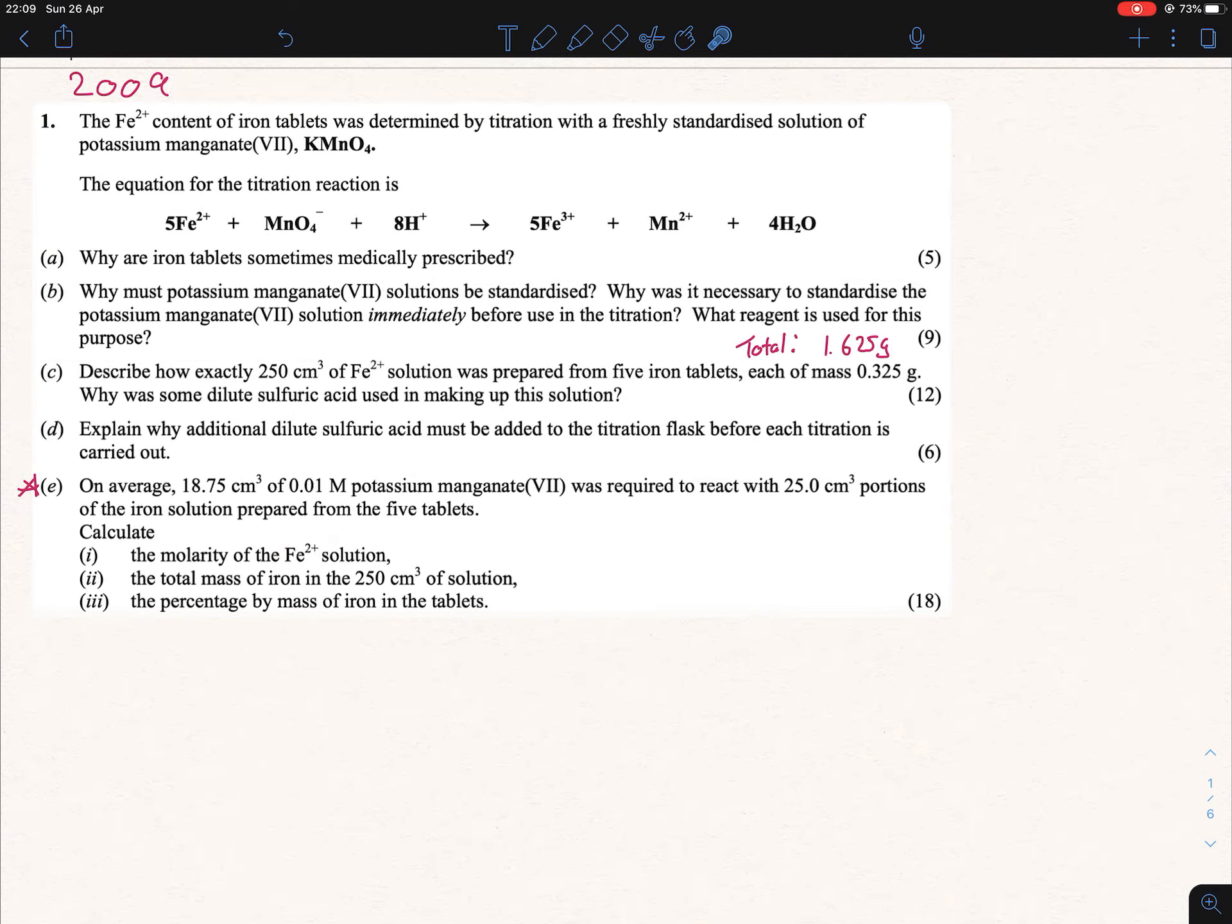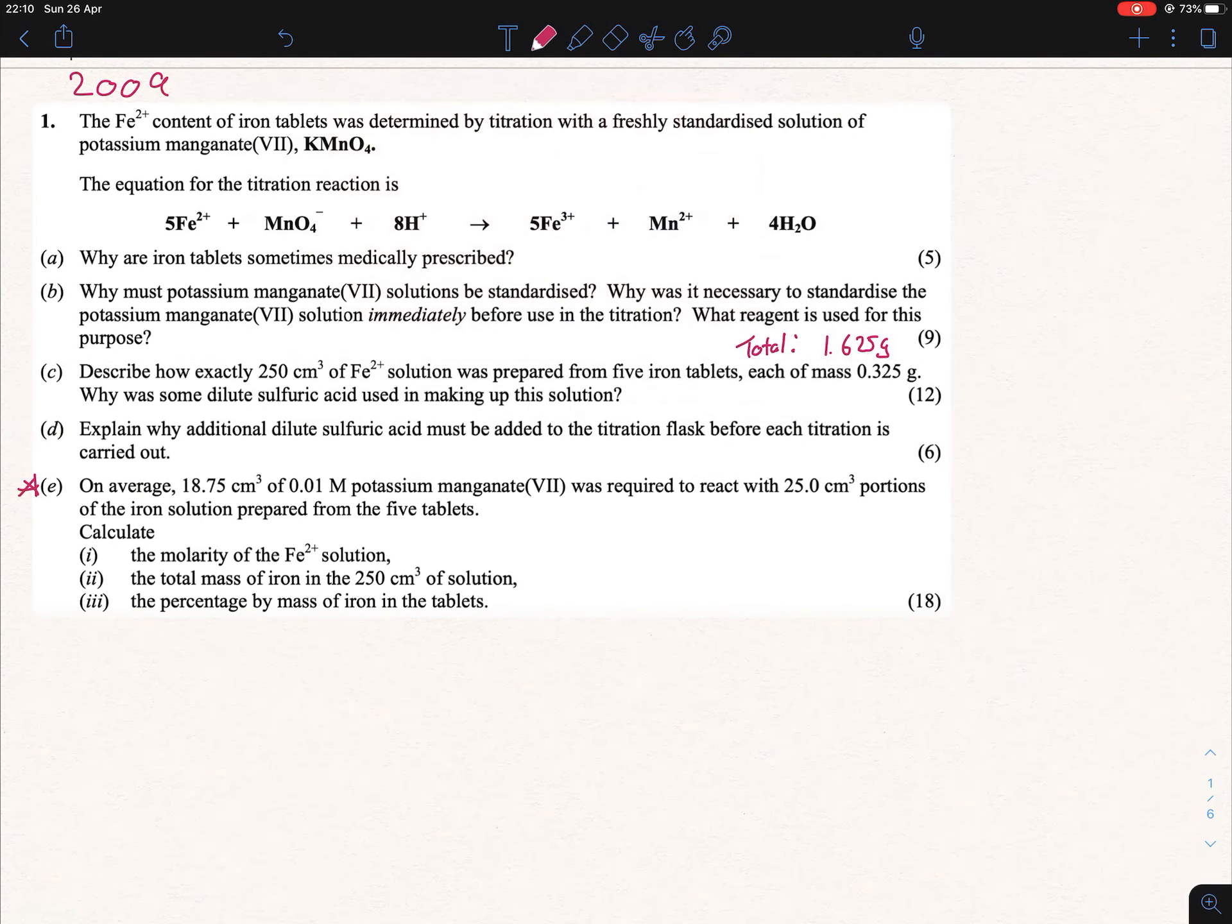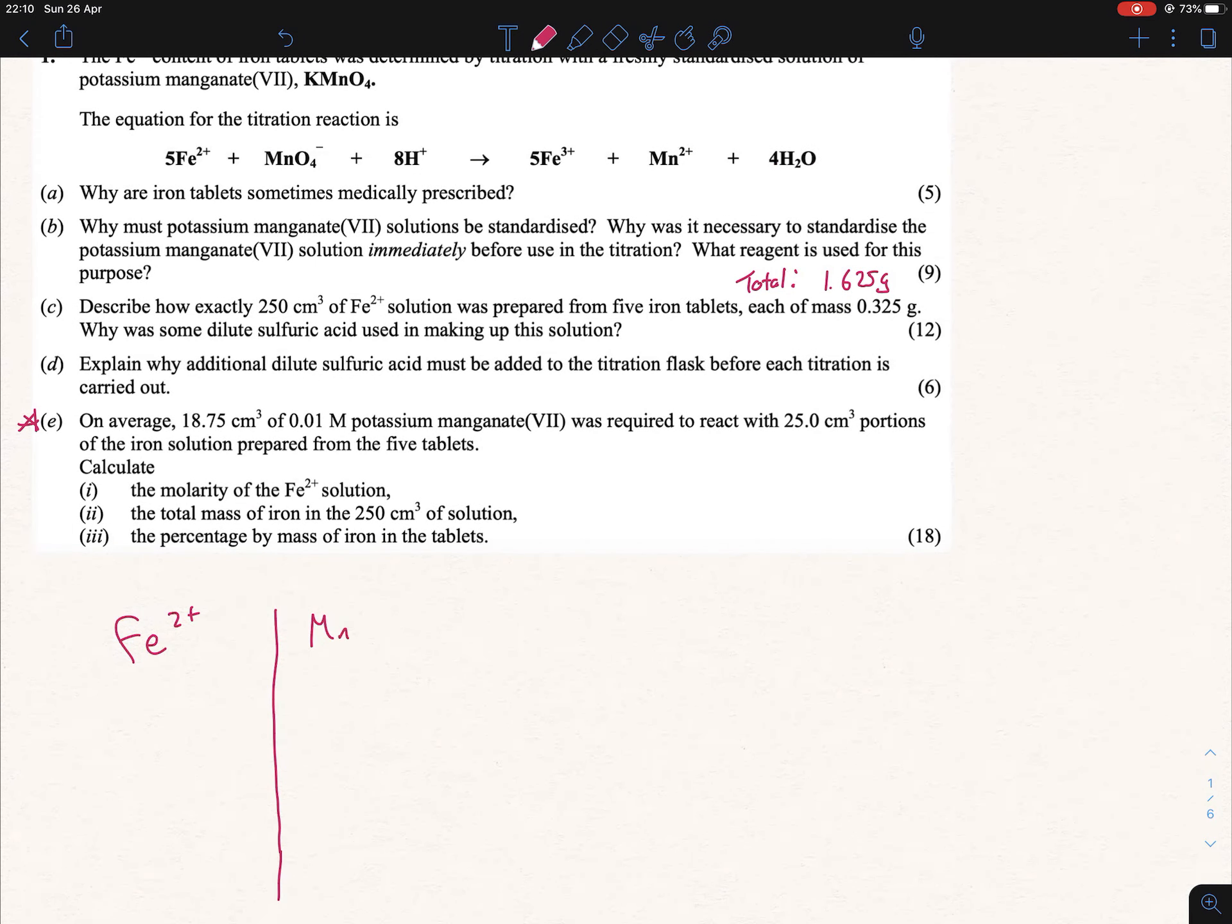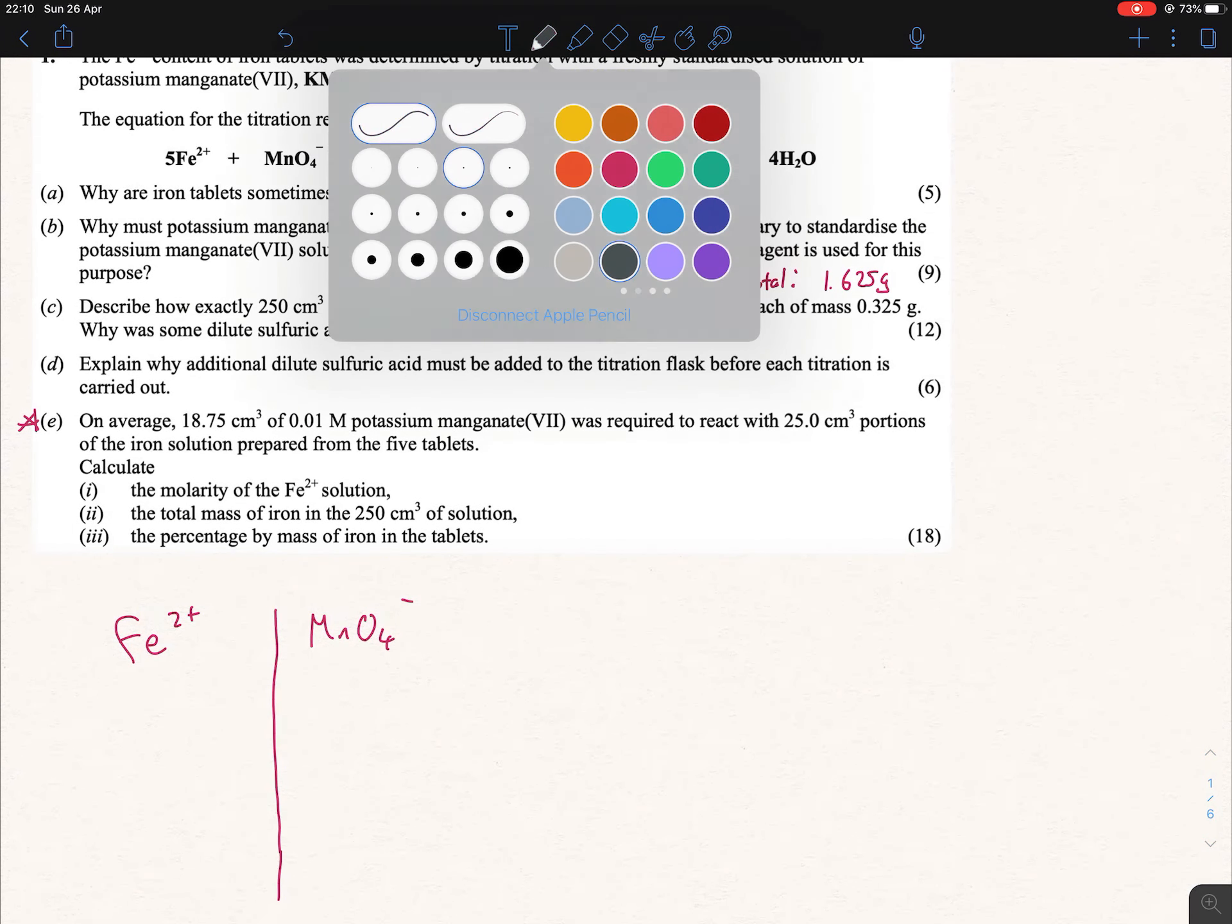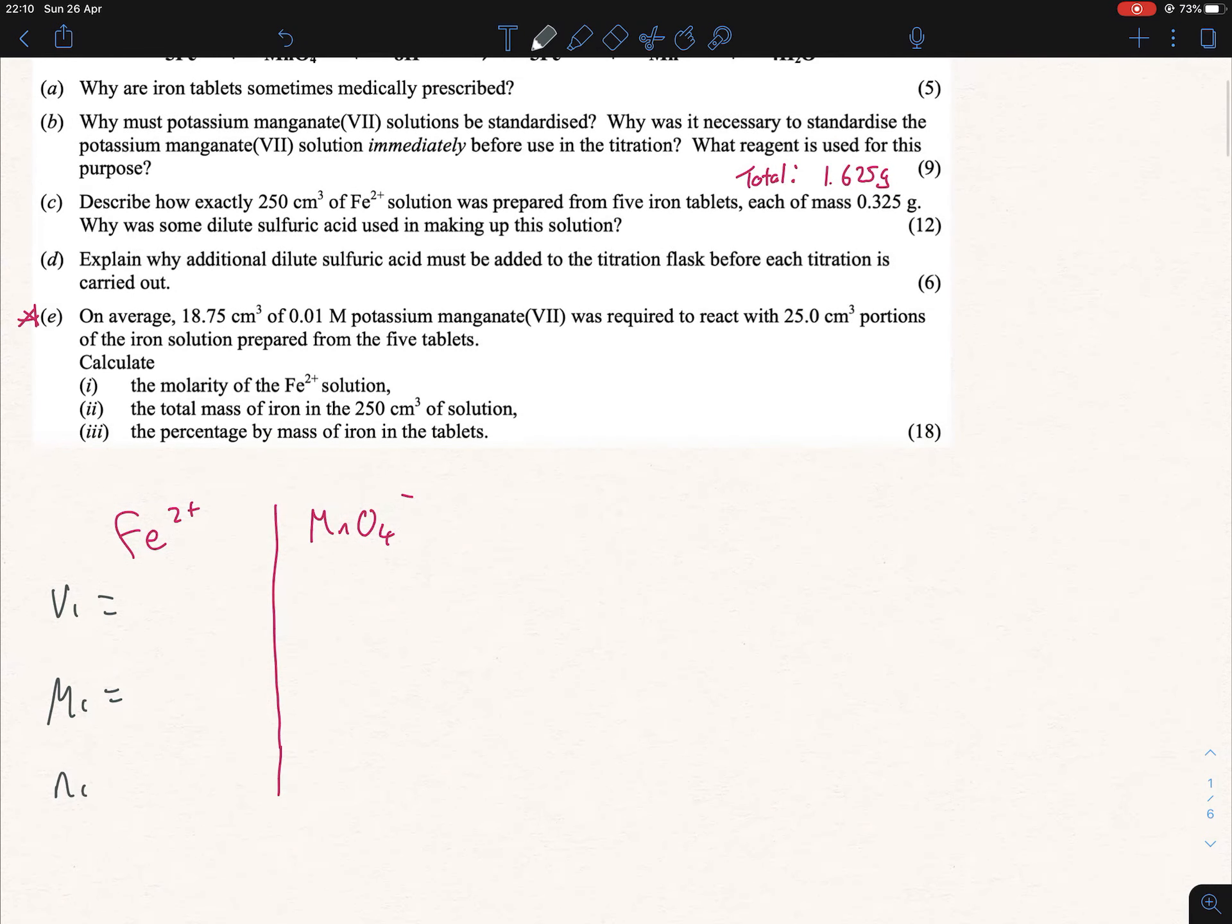What formulas can we use? Let's see if we can use our M1V1 over N1. Put your Fe²⁺ over here and your MnO4⁻ here. We're going to write out our key: V1 equals, M1 equals, and N1 equals, and over here V2 equals, M2 equals, and N2 equals. We're looking for the molarity of Fe, so that has to be X. We need everything else here to figure out what X is.